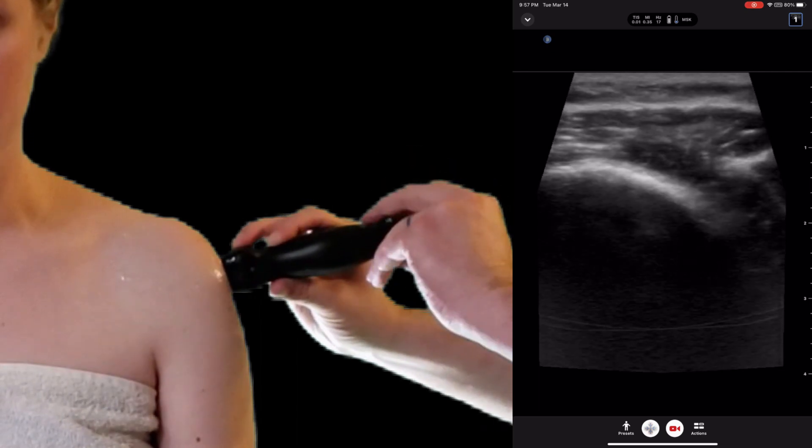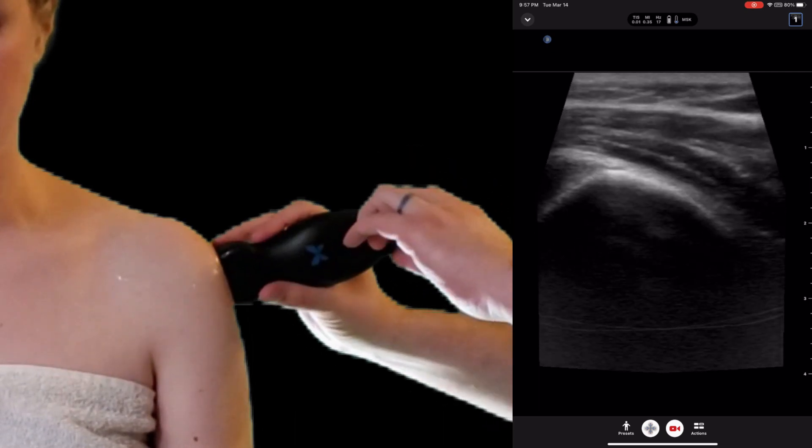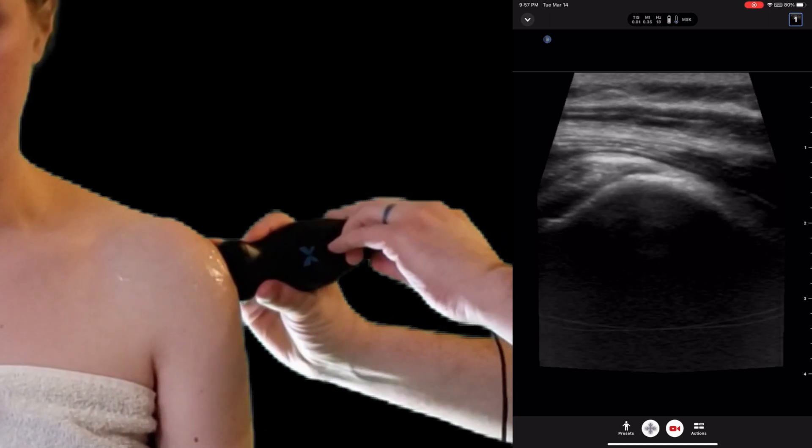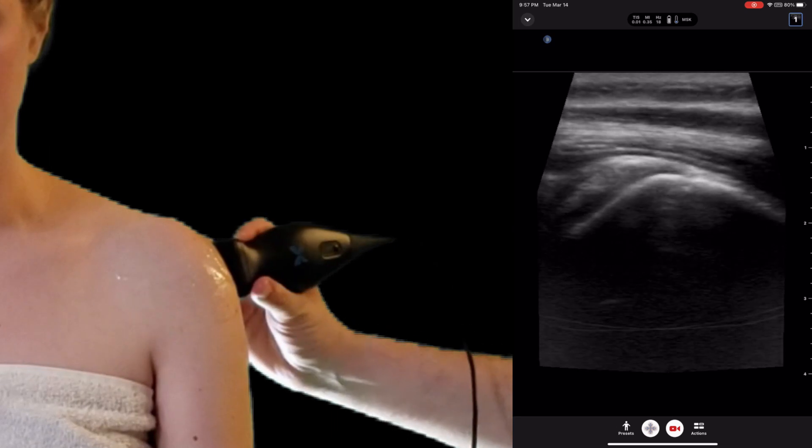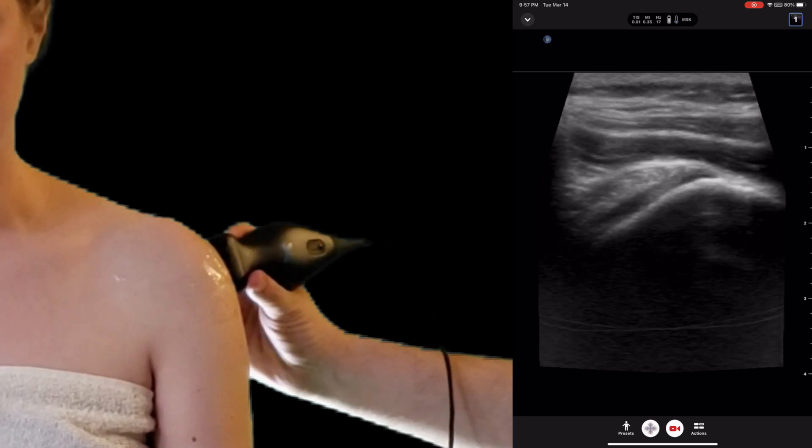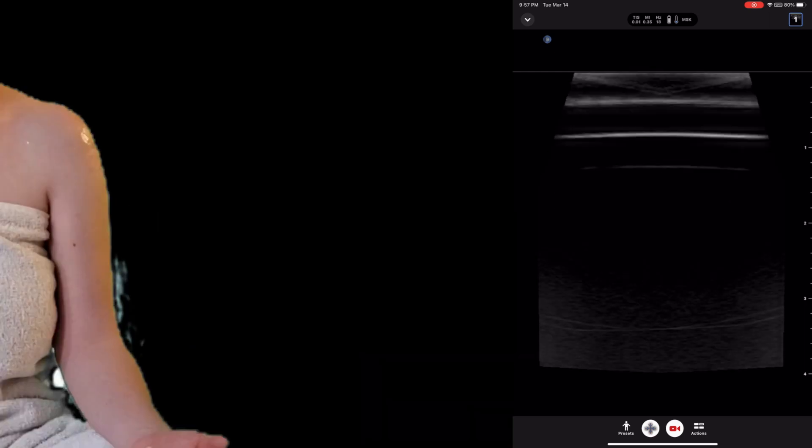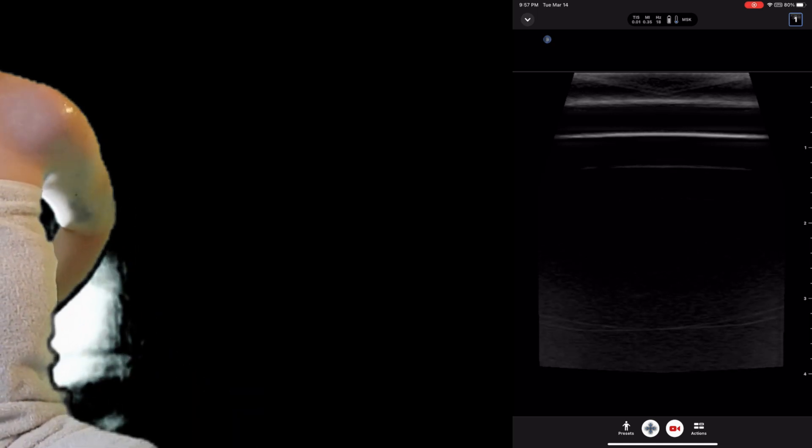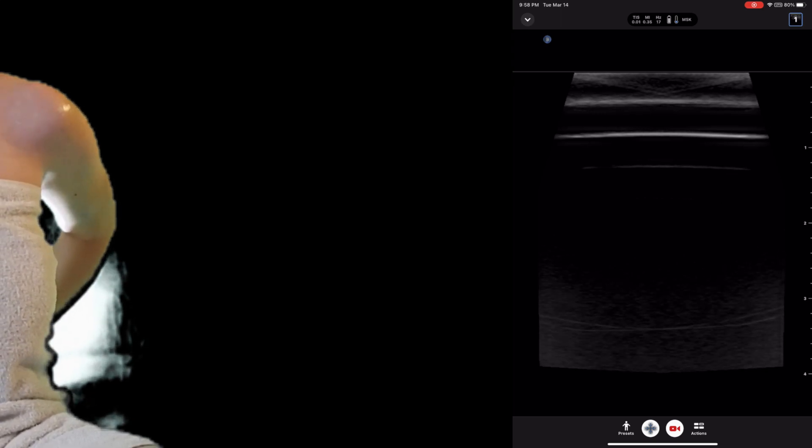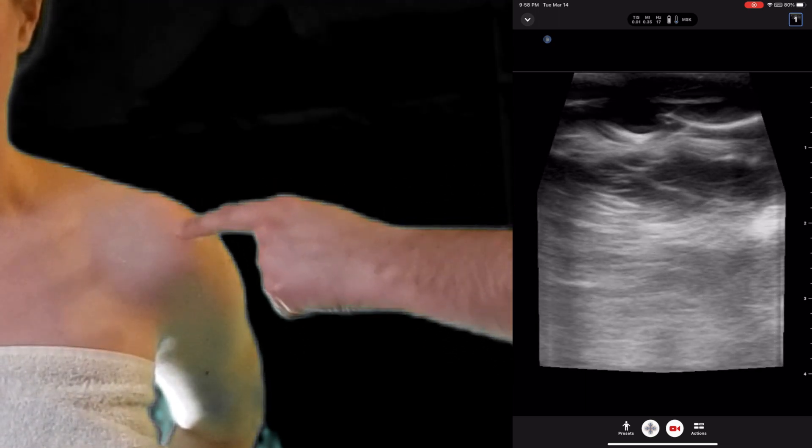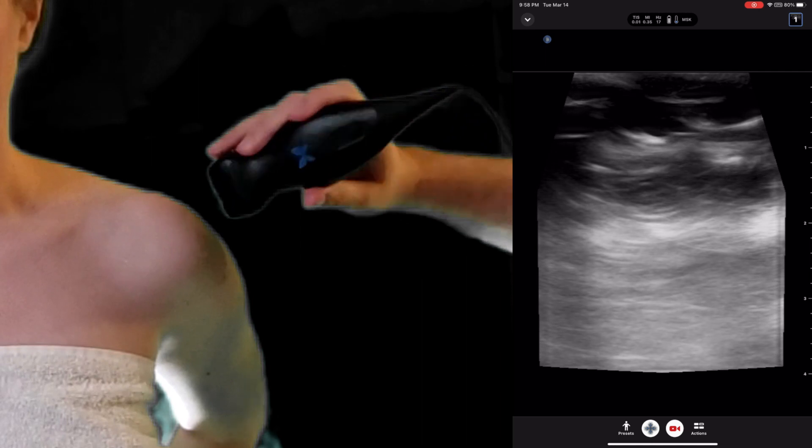Then we will turn the probe 90 degrees, and again evaluate the tendon for any signs of tear or pathology. We'll have our patient put their hand on the backside of their hip. This brings the supraspinatus out from underneath the acromion, and we'll evaluate the supraspinatus on the anterior and superior part of the shoulder.